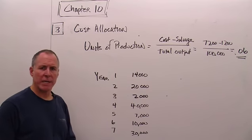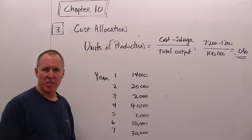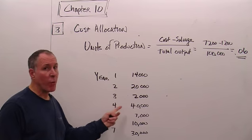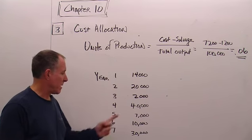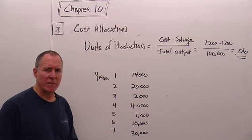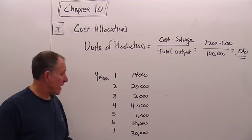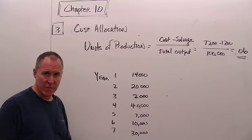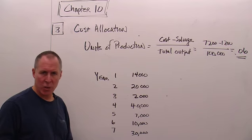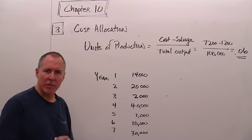Notice what happens in year three: we only produced 2,000 activity units, so depreciation expense goes way down. It goes back up in year four because we produced 40,000 units. In year five, 7,000 units. Even though the useful life was stated as five years, because we didn't use the asset as much as expected, we continue to depreciate it after five years — because we're concerned with total output, not number of years.